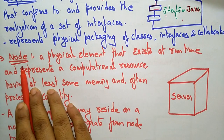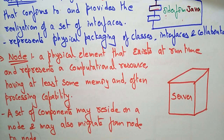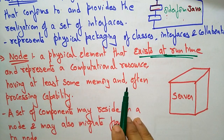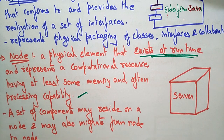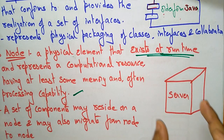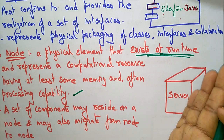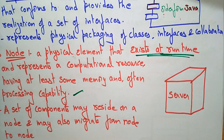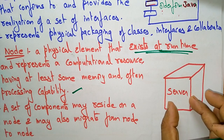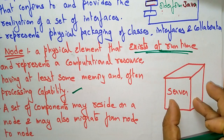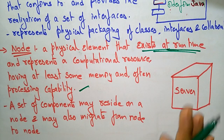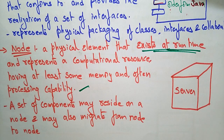The next structural thing is node. A node is a physical element that exists at run time and represents a computational resource having at least some memory and often processing capability. So far whatever we discussed was just pictorial representation, whereas a node has actual computational resources at run time. The node is represented like a cube — just like a server. A set of components may reside on a node and may also migrate from node to node.